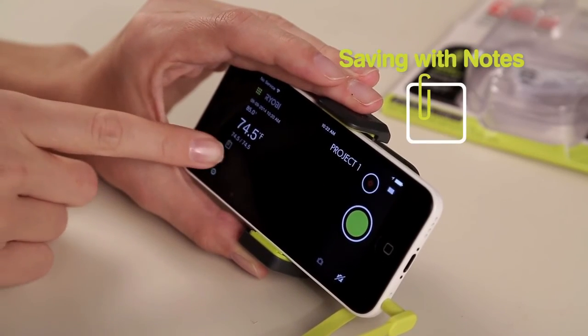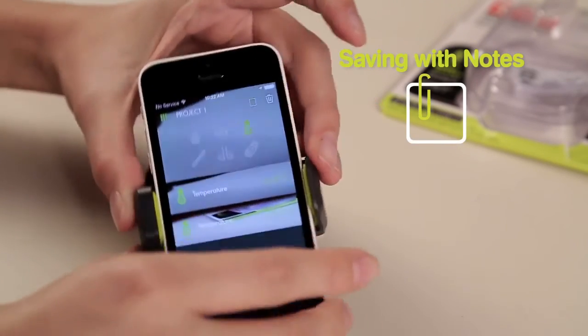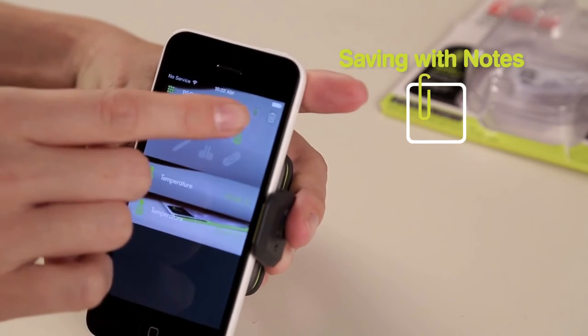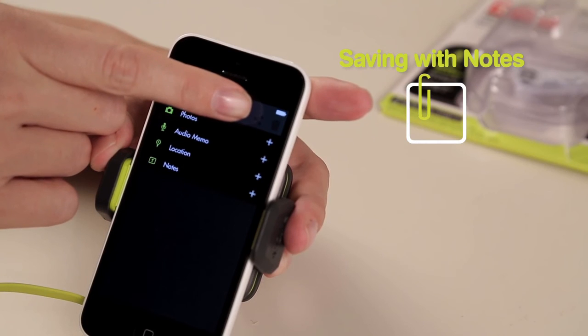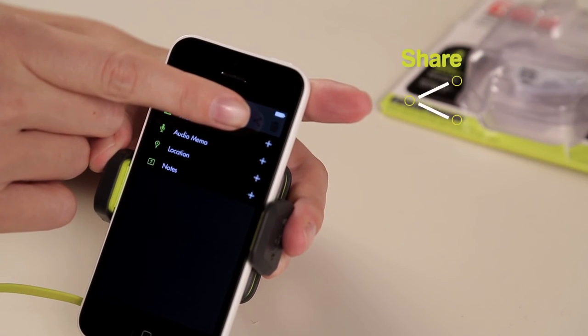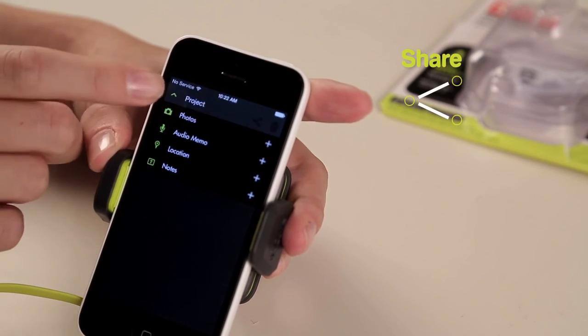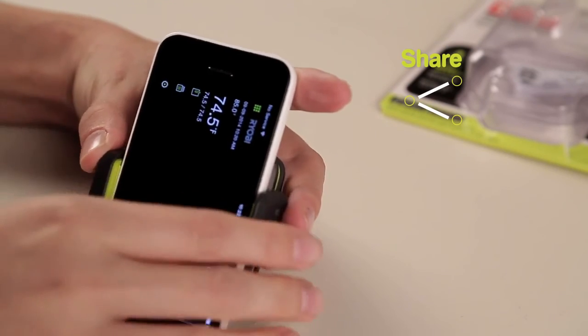To make a voice memo or add text to a saved project, select the filing cabinet icon and then the note icon. From there you can choose which note method fits your needs best. To share an image, select the share icon to email or post your project to social media.